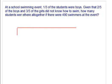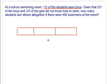We draw a model for the total number of students. Since 1/3 of the students are boys, we divide the bar into 3 parts. One part represents boys, and the remaining 2 parts represent girls. Given that 2/5 of the boys did not know how to swim, we need to divide the boys' portion into 5 parts.